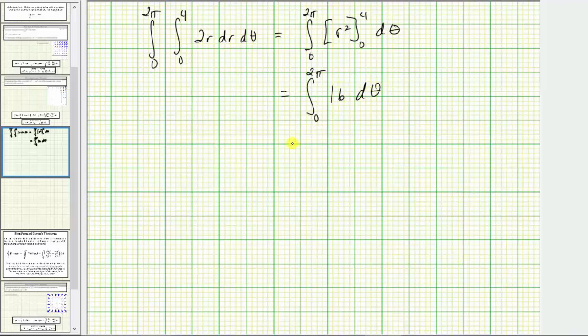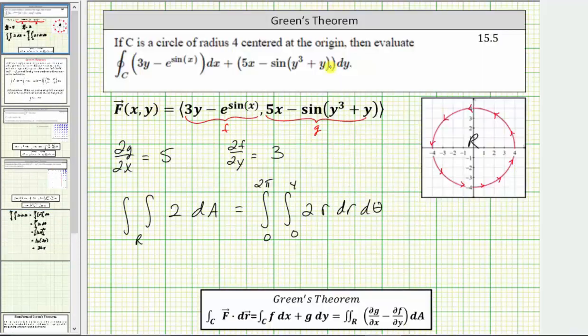And now we integrate with respect to theta, which is just 16 theta. And now we find big F of B minus big F of A one more time. We have 16 times the quantity two pi minus zero, which is two pi, which gives us 32 pi, as the value of the double integral, which is also equal to the given line integral. I hope you found this helpful.